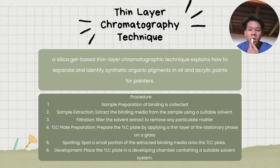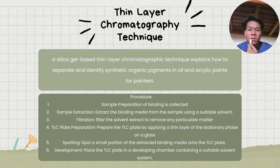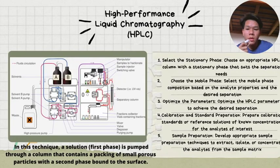For the TLC plate preparation, the TLC plate is prepared by applying a thin layer of stationary phase on a glass surface. Fifth is spotting — spot a small portion of the extracted binding media onto the TLC plate. Sixth is development — place the TLC plate in a developing chamber containing a suitable solvent system.